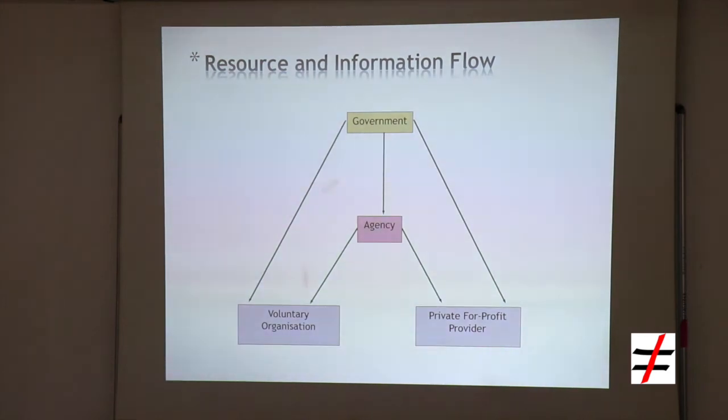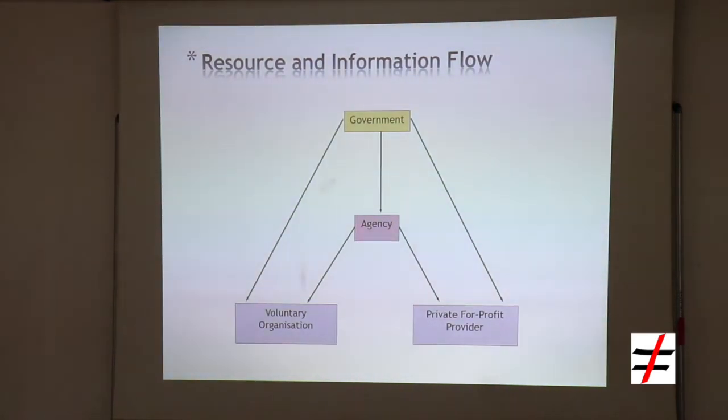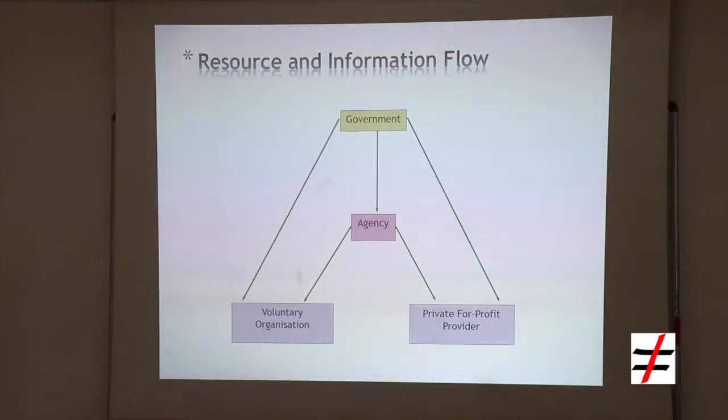The resource and information flow in the network: the resource flow is unidirectional, from the government or the agency to the voluntary organisation or the private for-profit provider. The resource flow can be one-time, such as allocation of land or grant, or it can be recurrent, like when items are given in kind such as sutures and lenses for performing cataract surgeries, contraceptives, and IEC material.